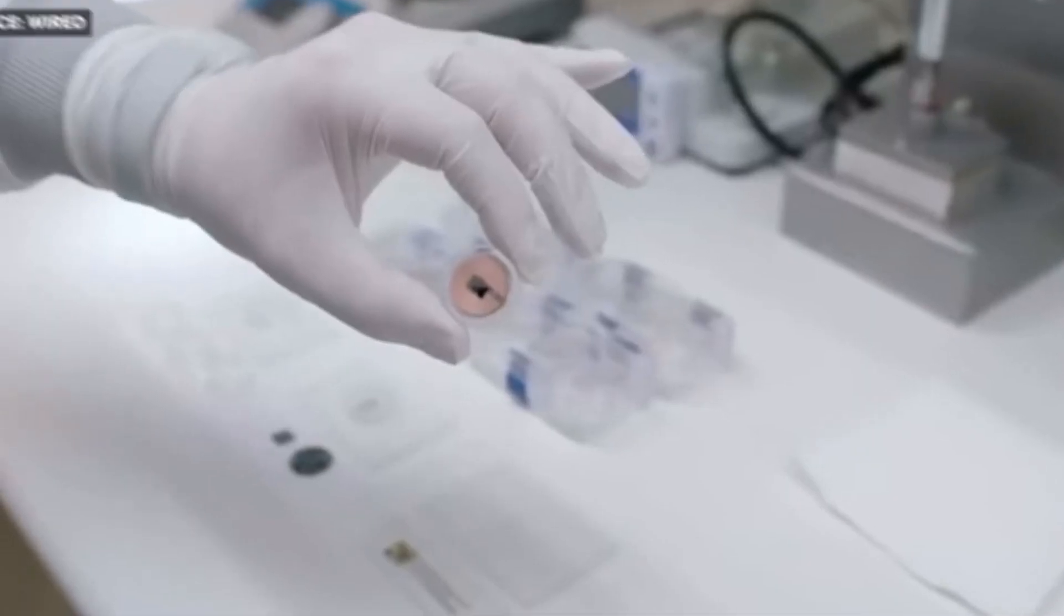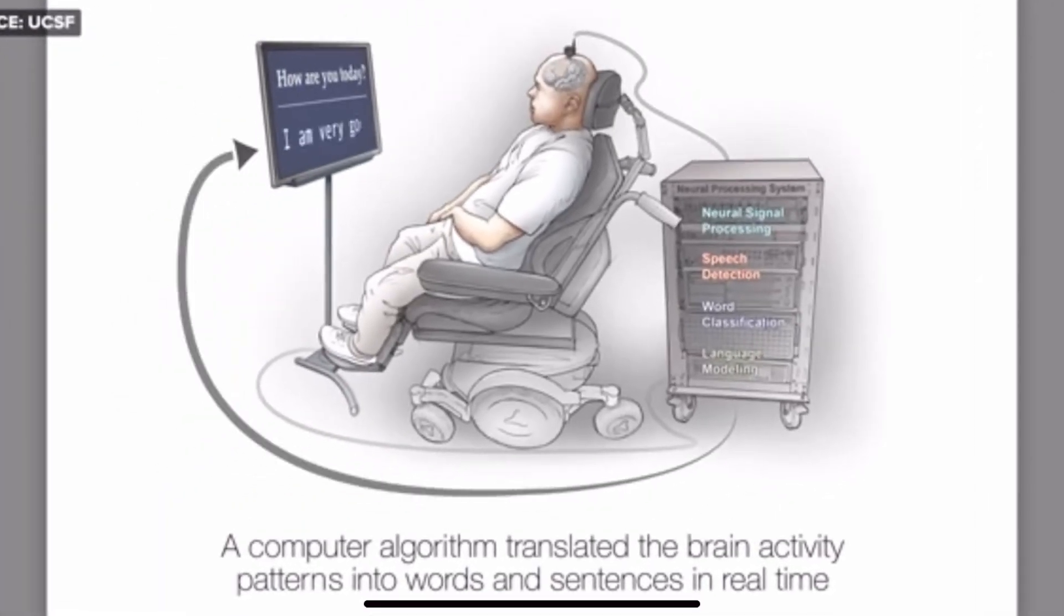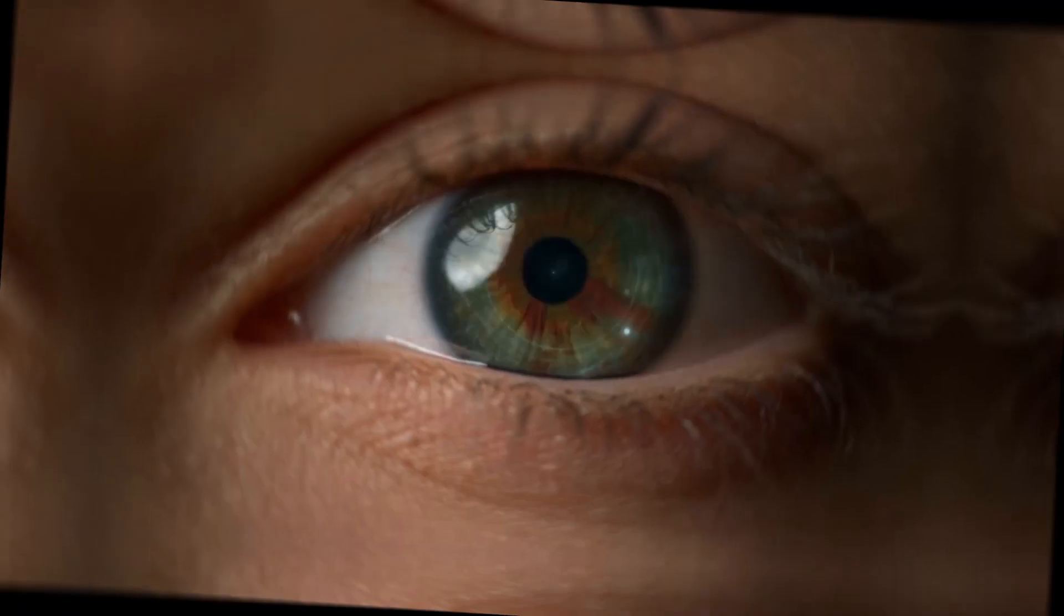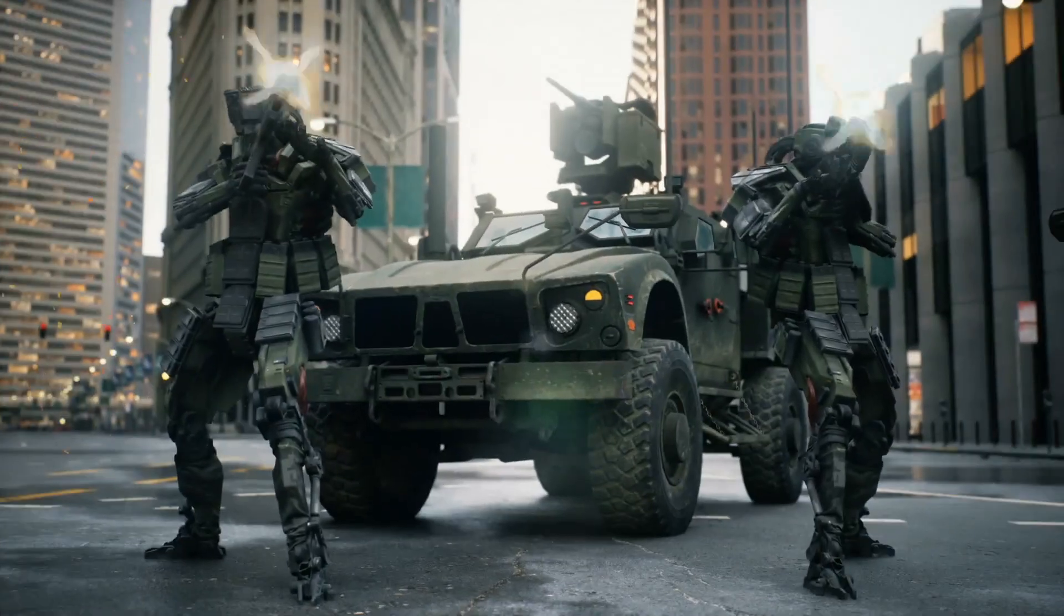The Neuralink brain chip hooks you up with a direct connection between your brain and a computer. It's like plugging yourself into the matrix, except you're not fighting killer robots. Thank goodness. Now, let's get real for a sec. What does all this mean for humanity? It means we're on the verge of a freaking revolution.